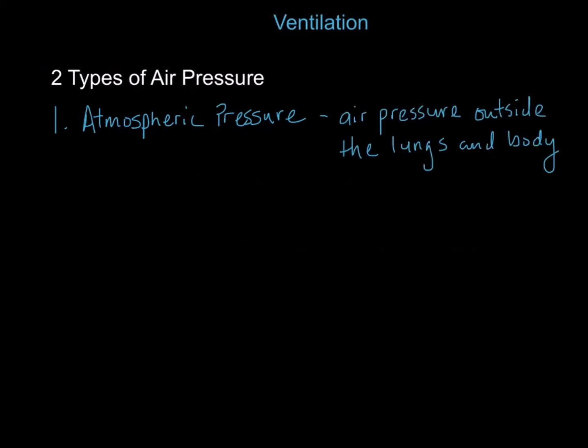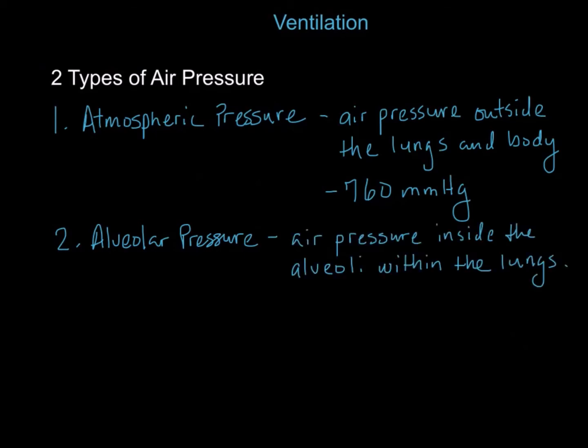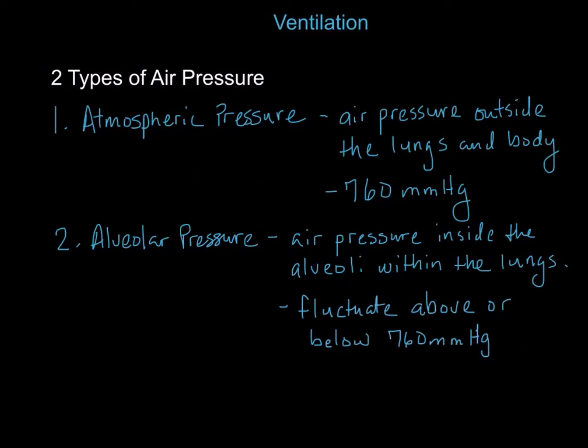When discussing ventilation, there are two types of air pressure. The first type is atmospheric pressure, which is the air pressure outside the lungs in the body, and it has a value of 760 millimeters of mercury. The second type is alveolar pressure, which is the pressure inside the alveoli within the lungs. Alveolar pressure will fluctuate above or below 760 millimeters of mercury depending on the size and volume of the lungs.